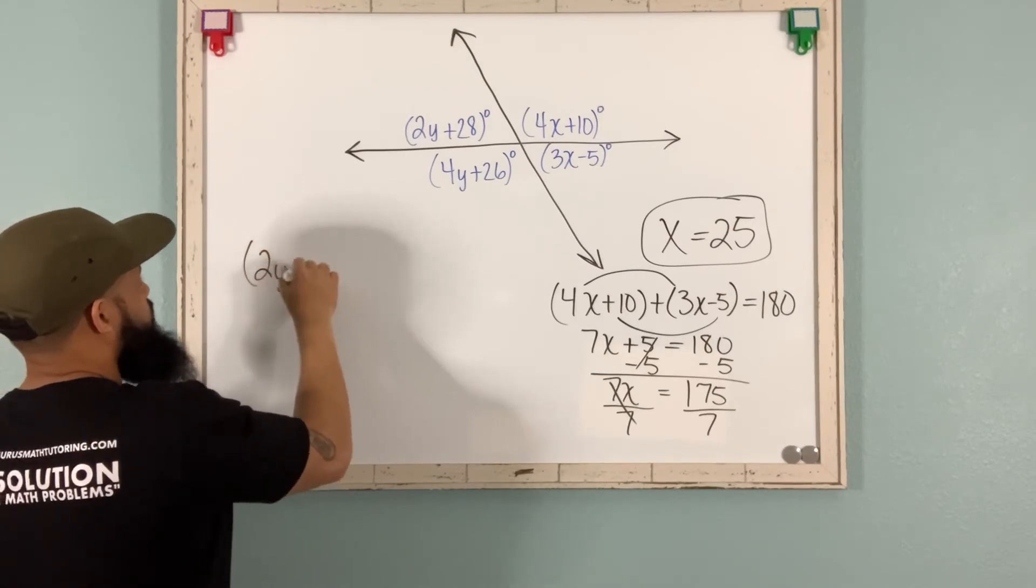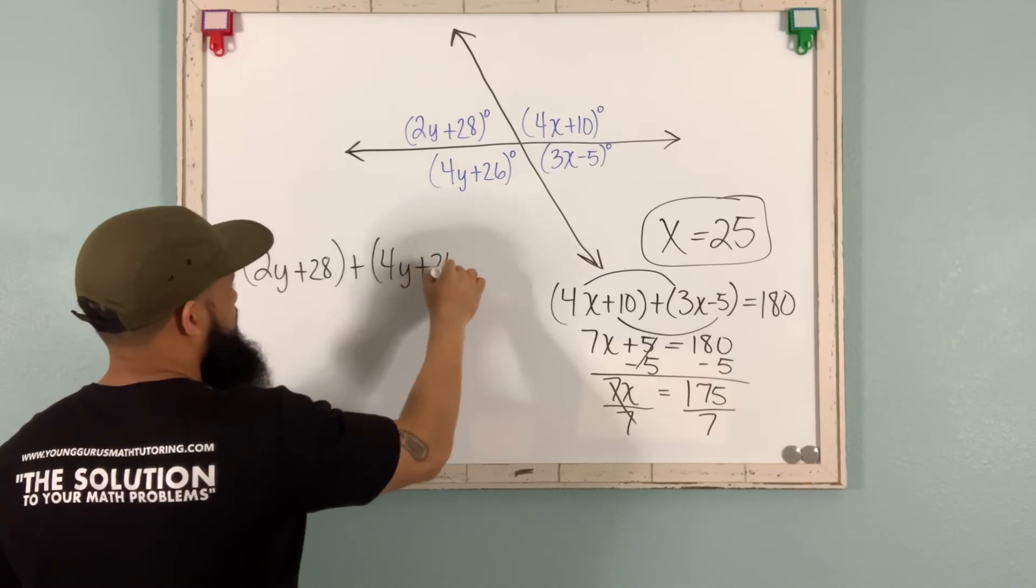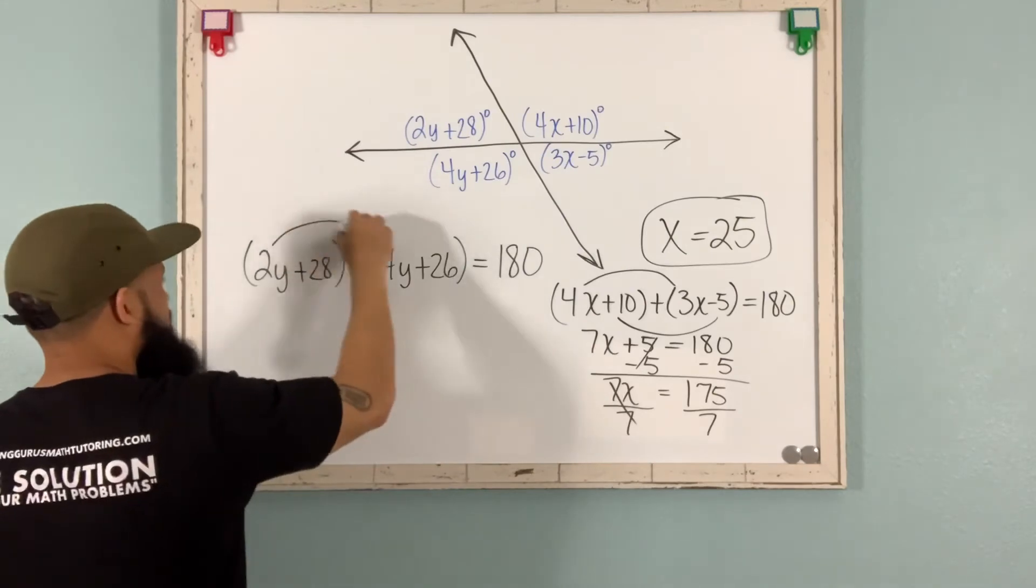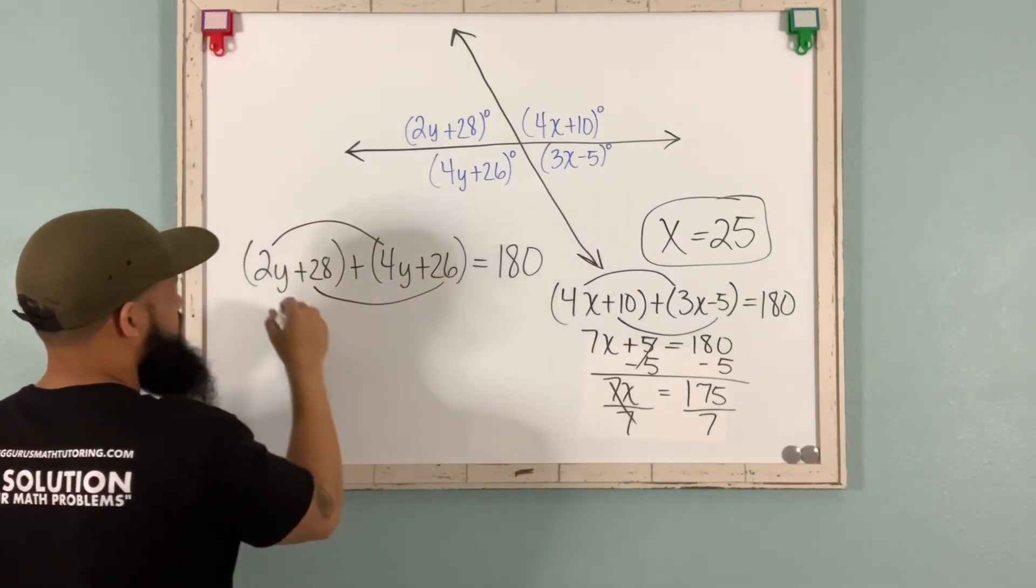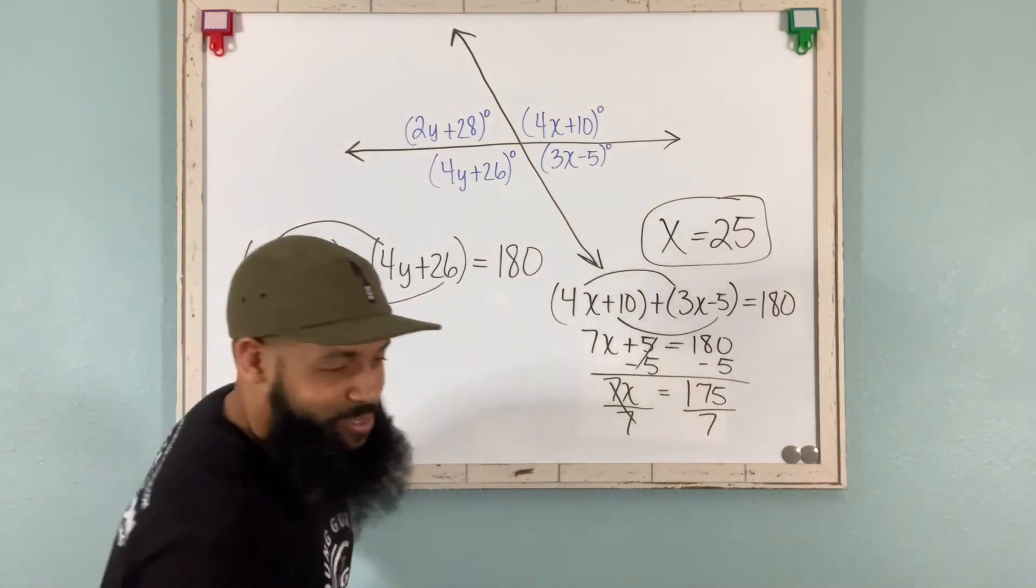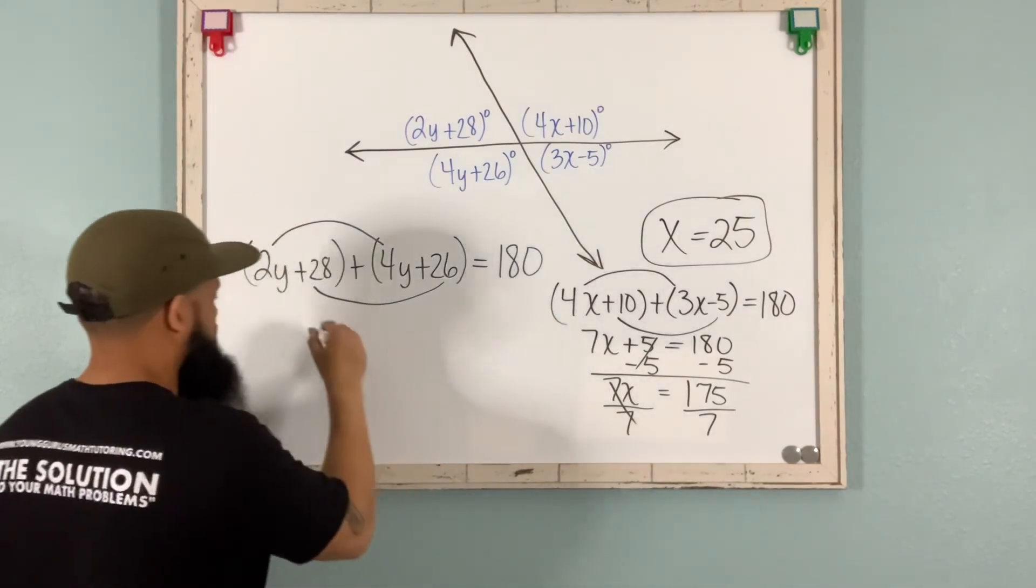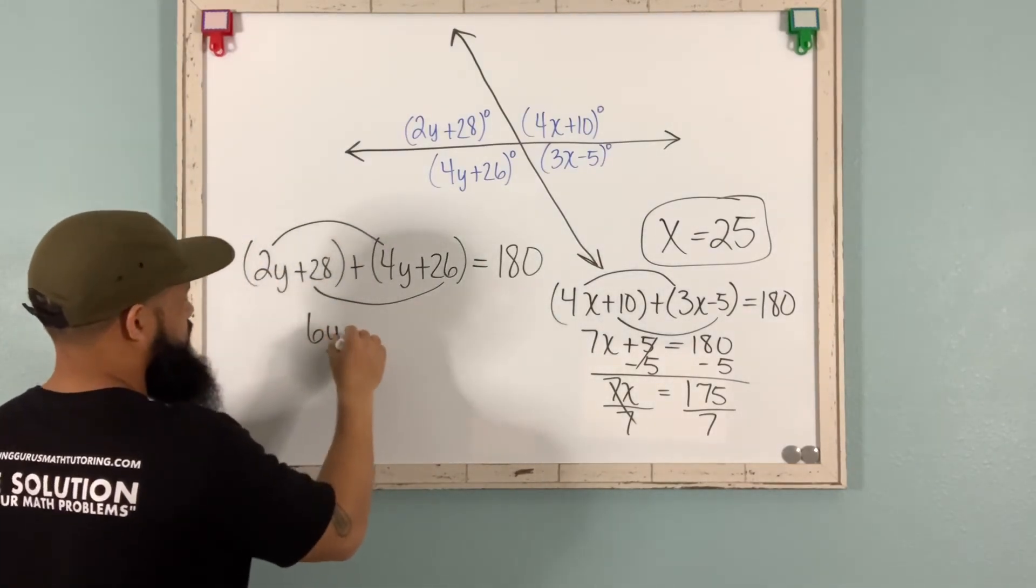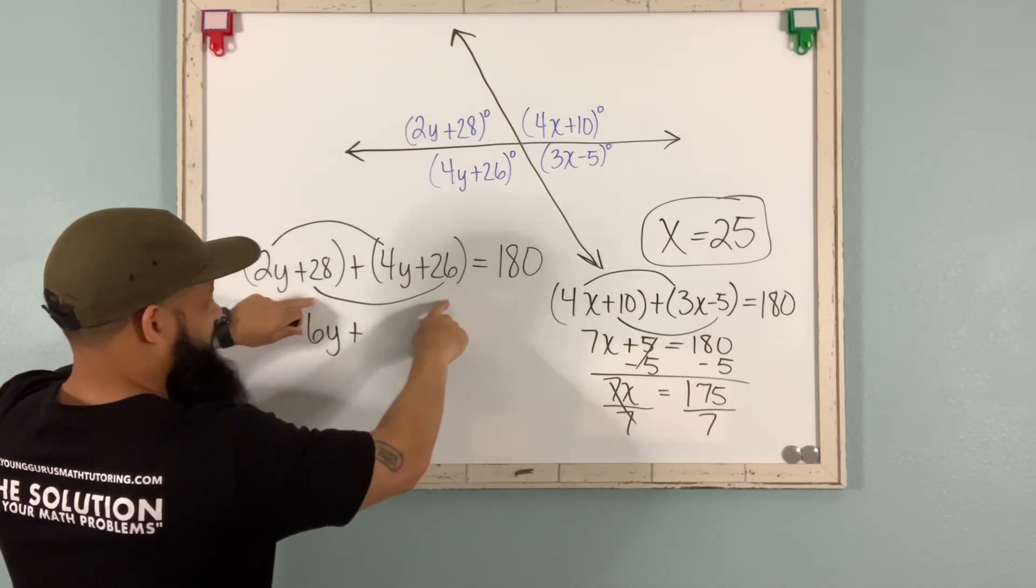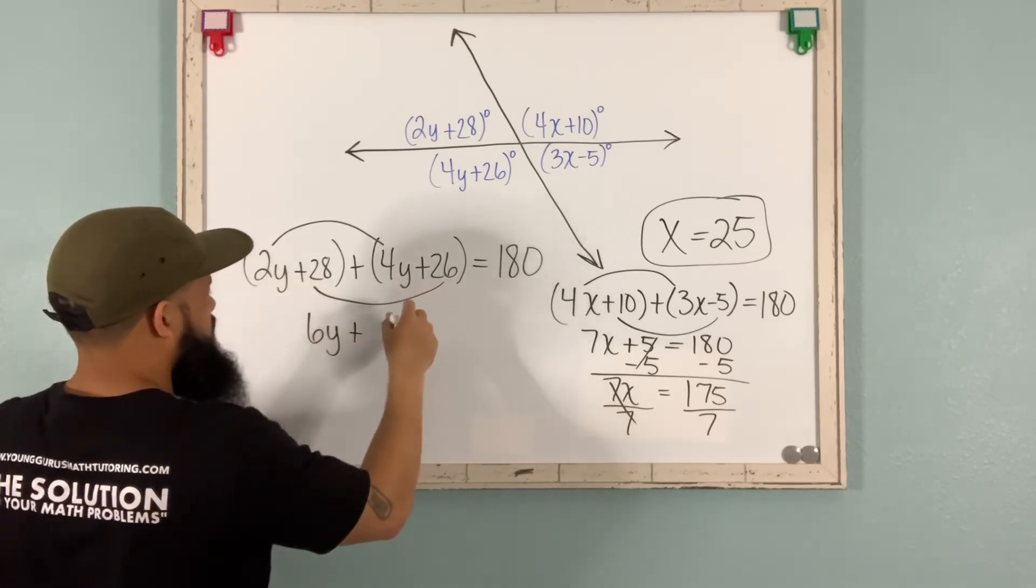Here we have 2y plus 28 plus 4y plus 26. And that equals 180. Combine my y terms. Combine my constants. 2y plus 4y is 6y. So we have 6y plus 28 plus 26 is 54.